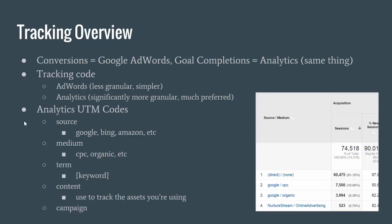For example, there's one here that says term — we can track the keyword that triggered that traffic, so we can get data on what keywords are performing well. There's one for content, so if we want to track the different assets or websites that we're sending people to. And then the last one, campaign, is kind of similar to content — we can track the campaign that the traffic is coming from. This is just a one-on-one overview on UTM codes, but if you want to learn more about it, I suggest looking it up.